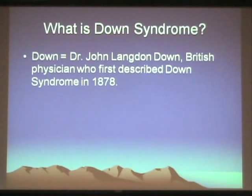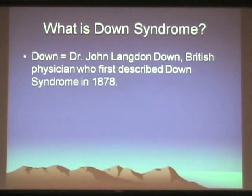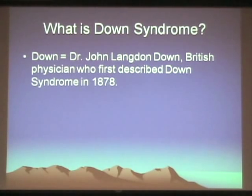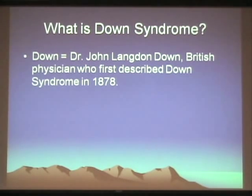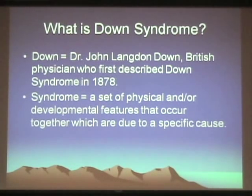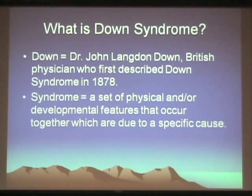Dr. Down was a British physician who first described Down syndrome in the 1800s. He actually thought it had something to do with mothers who had tuberculosis during pregnancy. It wasn't until the 1950s that the chromosomal basis was discovered. What we mean by 'syndrome' is a set of physical or developmental features that occur together in a fairly predictable fashion, due to a specific single cause.